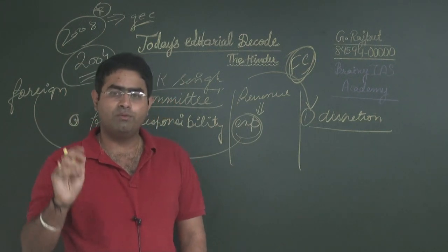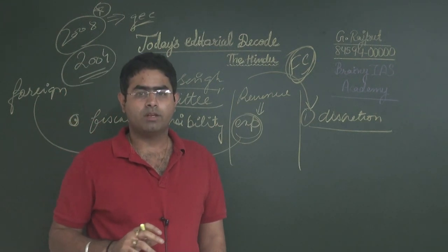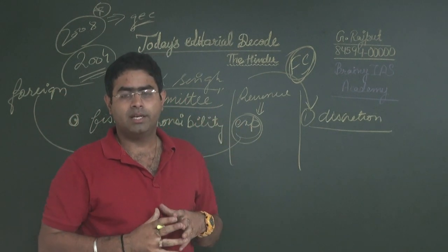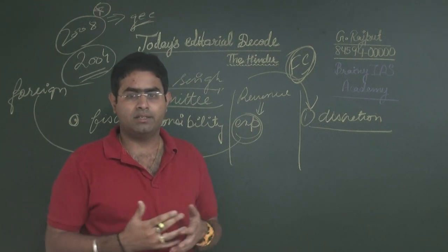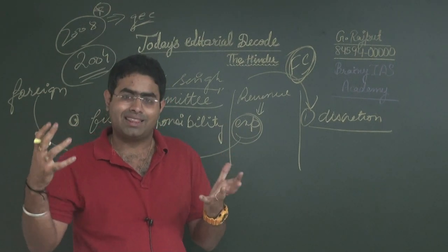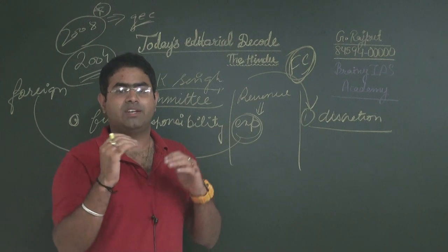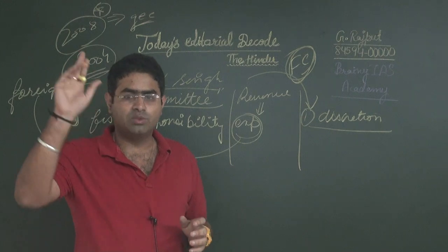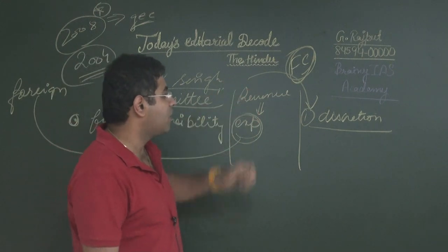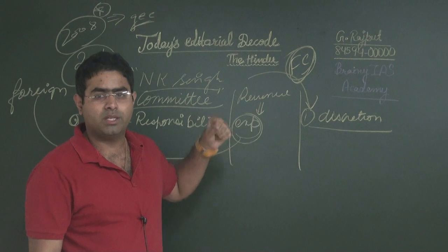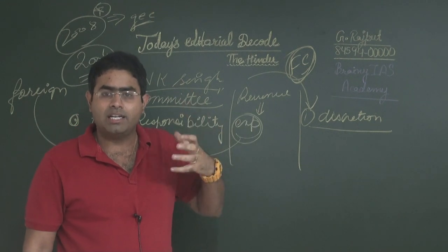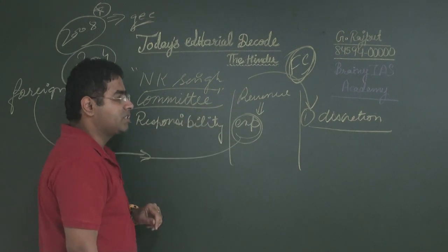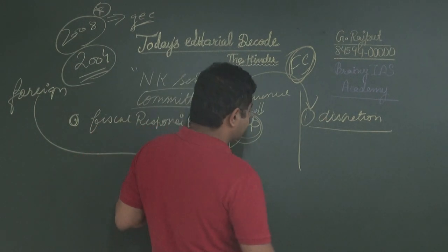According to the NK Singh Committee, this discretion should be taken care of by instituting a fiscal council. The fiscal council should work independently from the government, without any political influence. It is the fiscal council that should decide, as per fiscal ethics, what is the right limit of government spending. This discretion of current governments to spend more should be done away with by instituting this new fiscal council.